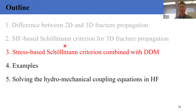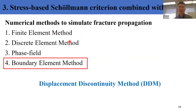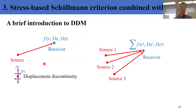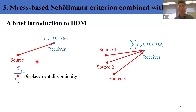Next I'll briefly introduce the DDM and explain the drawbacks of the SIF-based Schöllmann criteria, and why we need to return to the stress-based Schöllmann criteria. There are many different ways to simulate fracture propagation — FEM, DEM, phase field, BEM — but today I'm using the displacement discontinuity method, which is one type of BEM. Suppose there is a source and a receiver: at the source there is some kind of perturbation, defined as a normal displacement discontinuity — representing fracture opening — or a tangential displacement discontinuity, representing sliding between fracture faces.